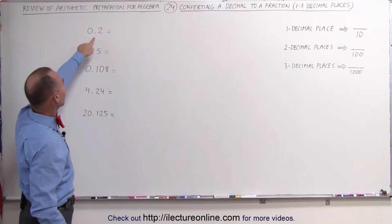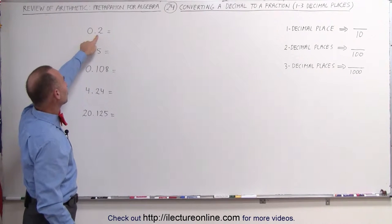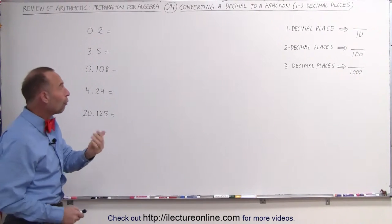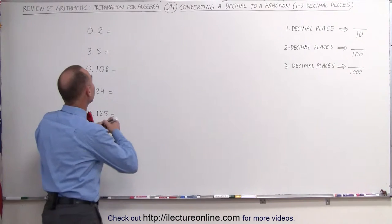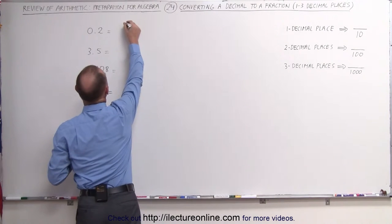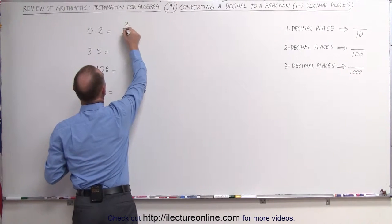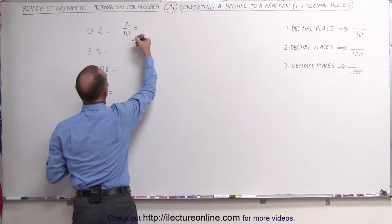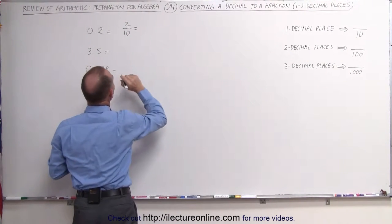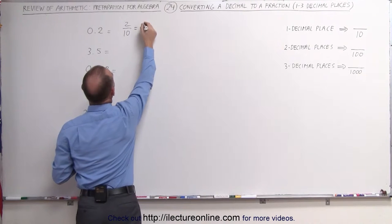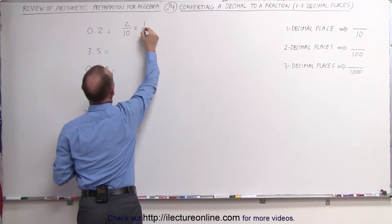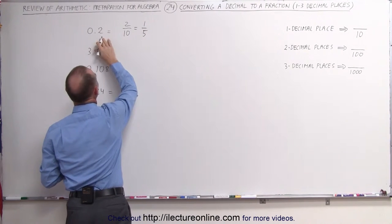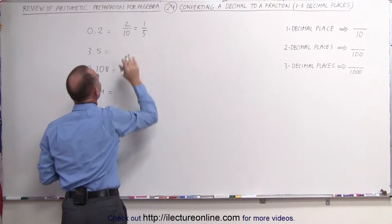Here we have 0.2, which is one decimal place. That means we're going to write it as 2 over 10. Then we can simplify that — divide both the numerator and denominator by 2 — which gives us 1 divided by 5. So 0.2 is the same as 1 fifth.